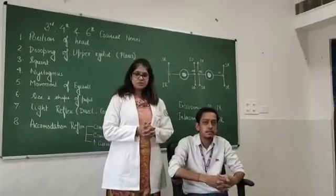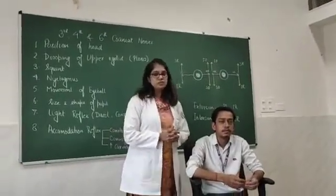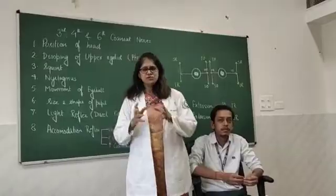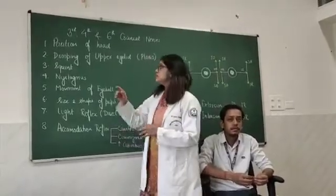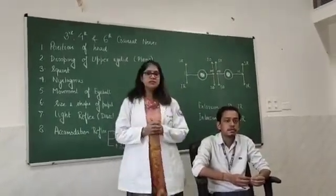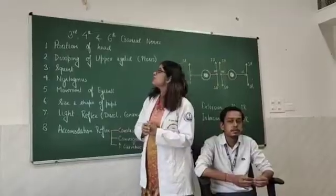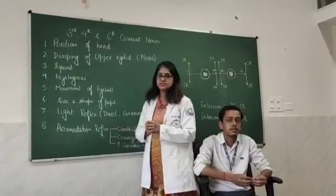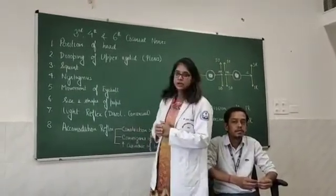We are going to start with the examination of the 3rd, 4th, and 6th cranial nerves. Due to the similarity of their actions, these nerves are examined together. The 3rd is the oculomotor nerve, the 4th is the trochlear nerve, and the 6th is the abducens nerve.